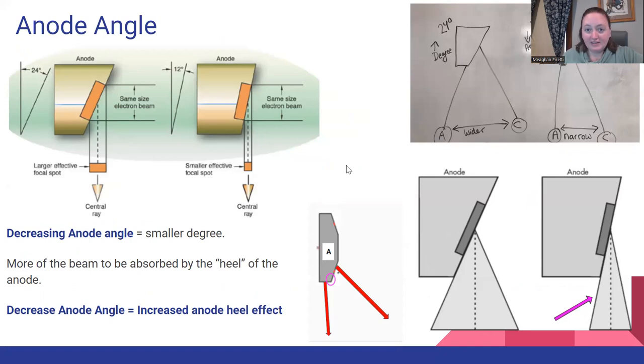The first thing that I want us to understand is that when you decrease anode angle, so this one is a 12 degree, it's a smaller anode angle. It's steeper. So your anode that's at an angle, when it's a smaller degree, it's steeper. It's more upright.